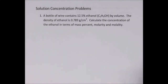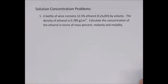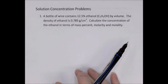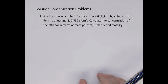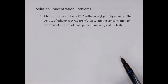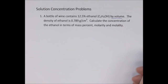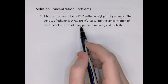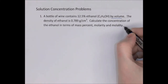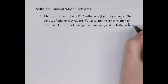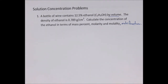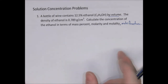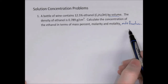In this video we're going to look at some more advanced problems involving concentration in the solutions unit for advanced chemistry. I strongly recommend that you pause the video, try the problem yourself, and then check my answer. Question one: we have a bottle of wine with 12.5 percent ethanol by volume. That 'by volume' is important. The density of ethanol is 0.789 grams per milliliter, and we're asked to find four units of concentration: mass percent, molarity, molality, and mole fraction.